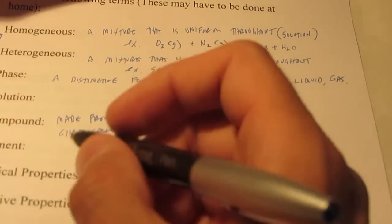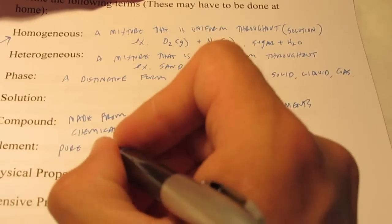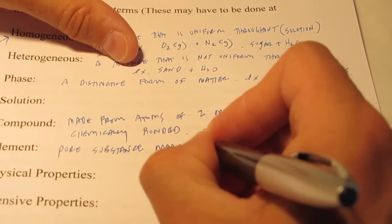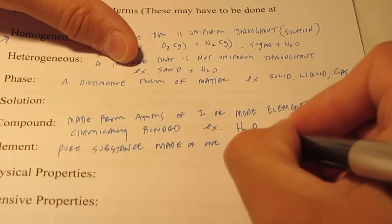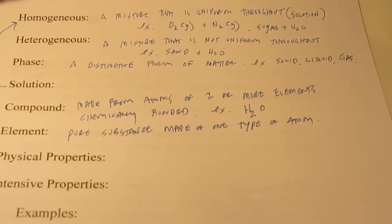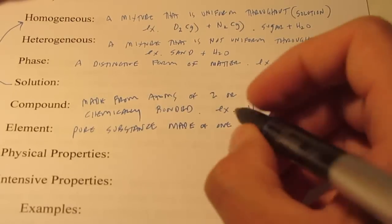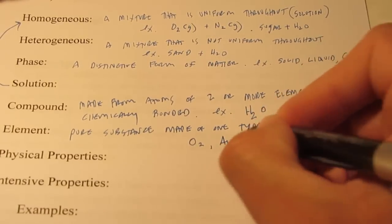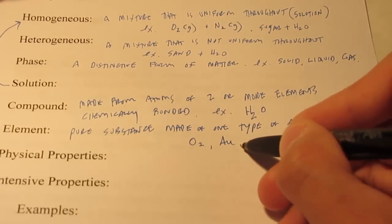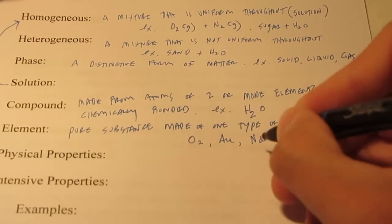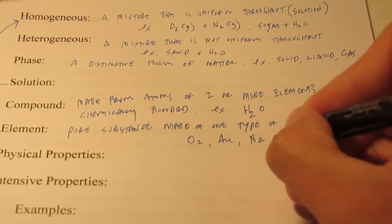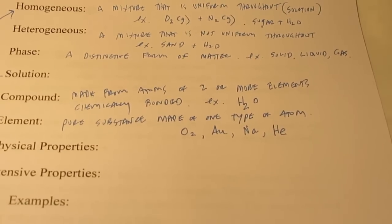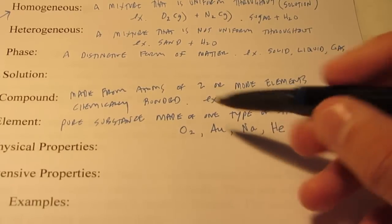Now an element is a pure substance made of one type of atom. So if I have a pure substance made up of only one type of atom, I have something called an element. So if I had oxygen gas, that's only made up of oxygen atoms. If I had gold, pure gold, it's only made up of gold atoms, so that would be an element. If I had sodium metal, it's only made up of sodium atoms, so that would be an element also. And then let's go ahead and pick on another non-metal. If I had helium gas, a balloon full of helium. All it would have is helium atoms, so that would be considered an element.